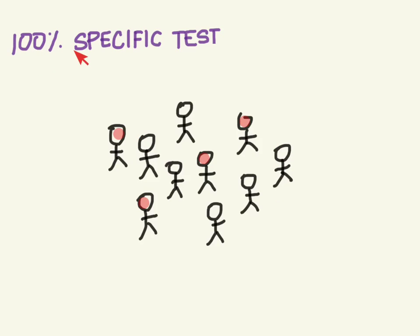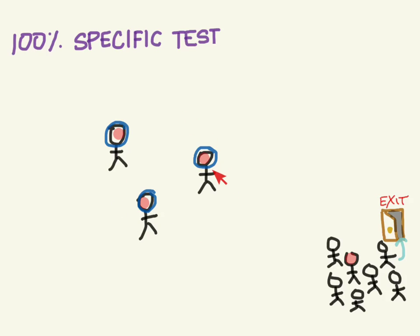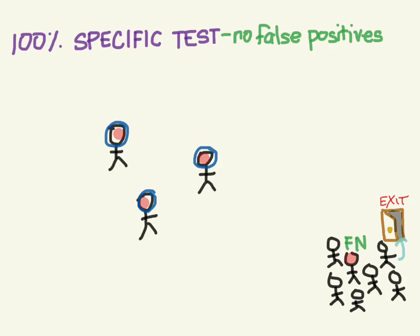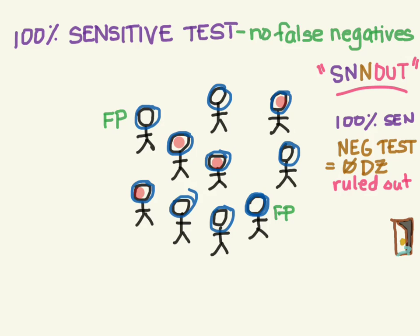Now let's look at a 100% specific test. Whenever the test is negative, we ask those people to leave, and we keep all patients who had a positive test. With our 100% specific test, we have not kept anyone who didn't need to stay — no one has been unnecessarily kept. But we have unfortunately sent home one person with a negative test who should have been positive — that was a false negative. So a 100% specific test has no false positives, and a 100% sensitive test has no false negatives. With 100% sensitivity you may have false positives but not false negatives, and with 100% specificity you may have false negatives but not false positives.